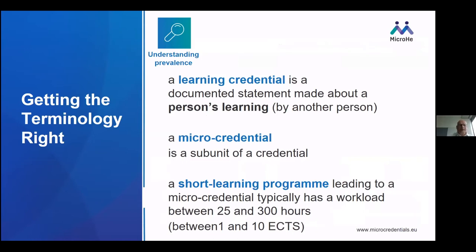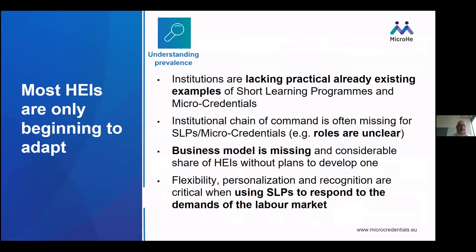A learning credential is a documented statement made about a person's learning by another person or institution. A micro credential is a subunit of a credential. A short learning program leading to a micro credential typically has a workload of between 25 and 300 hours, or 1 and 10 ECTS. Most higher education institutions are only beginning to adapt to the trend of unbundling of education and micro credentials. Institutions are lacking practical existing examples of short learning programs. Institutional chain of command is often missing; rules are unclear and a business model is missing.